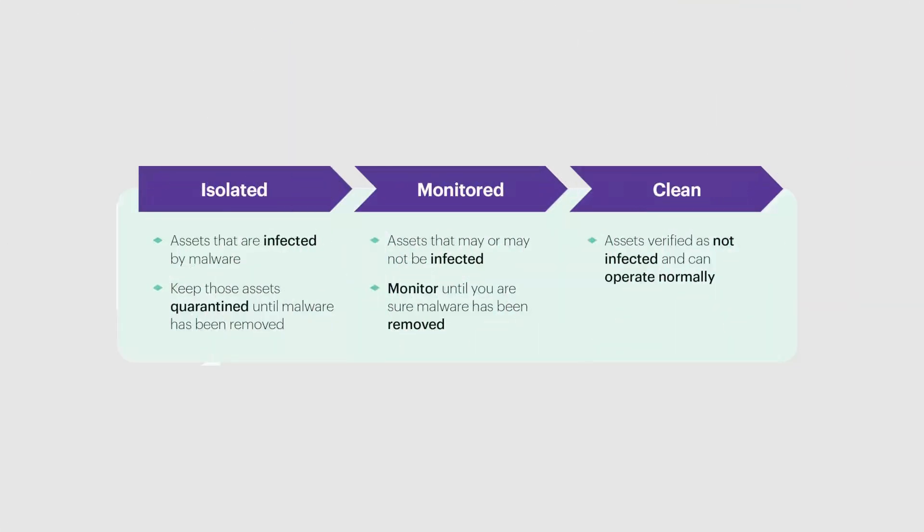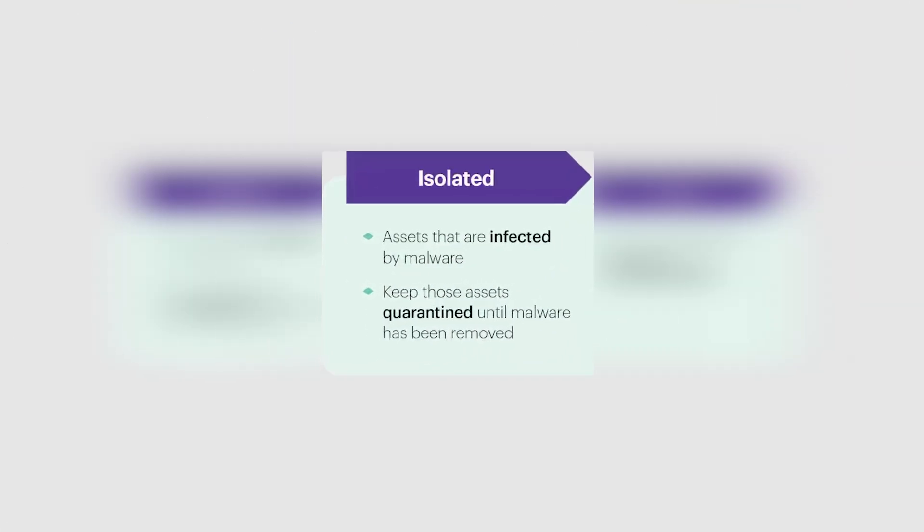Once a ransomware infection is identified, you should immediately isolate the infected system. Disconnecting the infected device from the network can prevent the ransomware from spreading to other connected devices. This step is just as important for containing the infection and limiting the potential damage to data and systems.